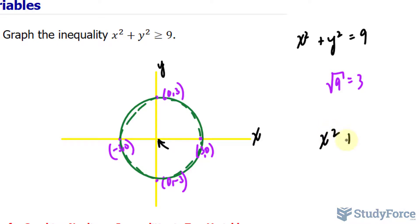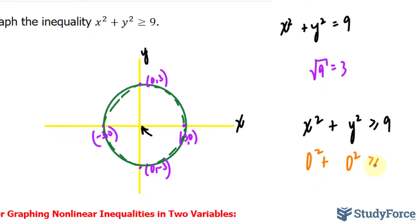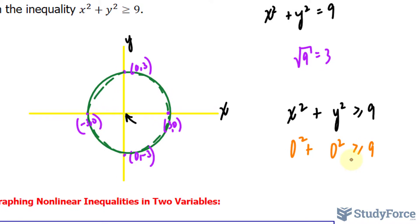if the inequality is true, then that's the region we shade. If it's false, then we shade everything other than the inside region. So substituting 0 into there and into there gives us a false statement. 0 is greater or equal to 9, which it's not. So we cannot shade the inside.